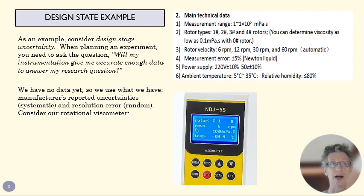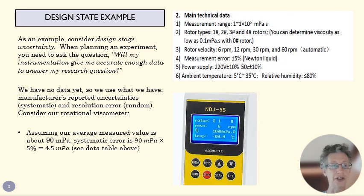So the way we do that is, for systematic error we would use manufacturer's reported uncertainties, and for random error we'll use resolution error. So consider our rotational viscometer, and here up in the upper right we have the manufacturer data from the manufacturer. In this case we would look up here and we'd say, okay, measurement error is plus or minus 5%. My average reading value is going to be at about 90 millipascals, so we do a little research to figure out where we thought most of our values would be. And I could see that my design stage systematic error is 4.5 millipascals.